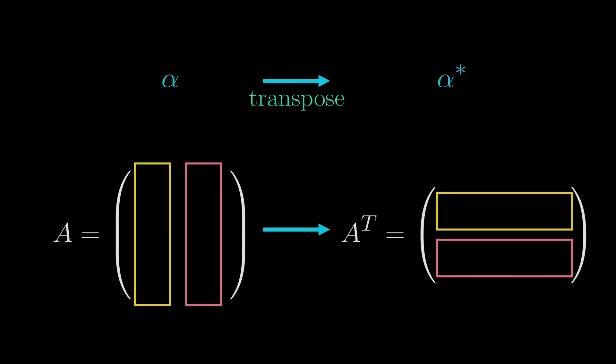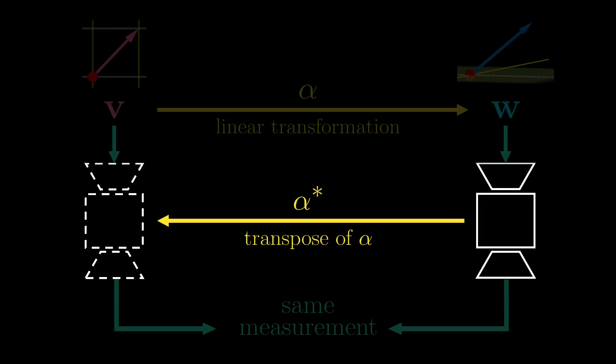The most important point here is the big picture: A transpose is just transforming some measurement device in another space back to that in the original space. In what remains, we will first try to visualize those covectors, and then the transpose.